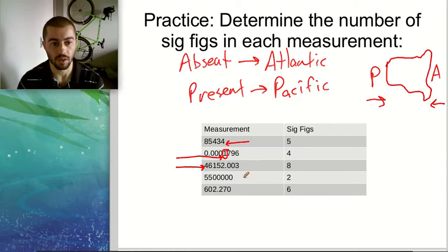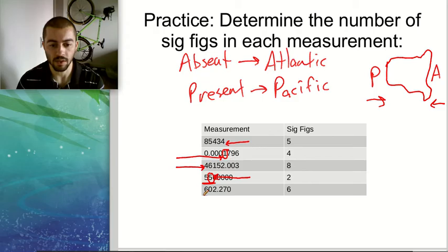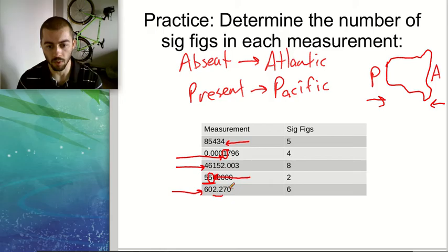For 5,500,000 — decimal place is absent, so we start from the Atlantic. We come in from the right, and the first digit we hit is the rightmost five. We have a total of two digits — the five and the next five over, so two sig figs. For the final example, we have a decimal place present, so we come in from the Pacific. The first non-zero digit we hit is six, and we count all the ones afterwards — even the trailing zero at the end counts because we're coming in from the Pacific — ending up with six total sig figs.